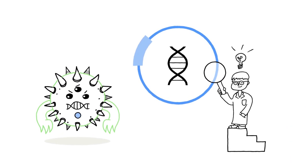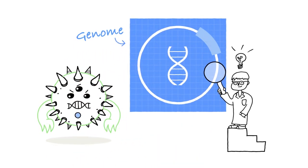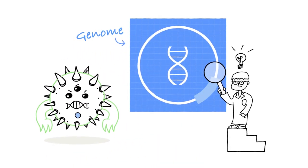Inside every bacterial cell is a collection of genetic information called the genome, a blueprint that determines what the cell can do.